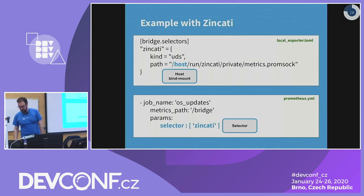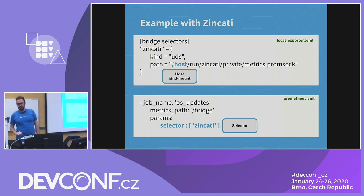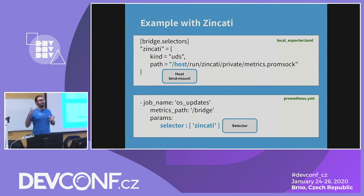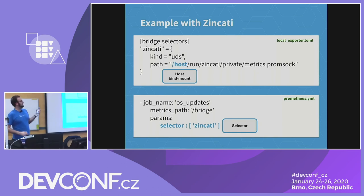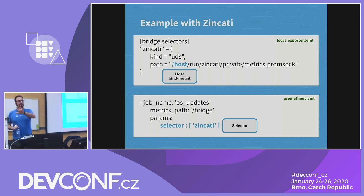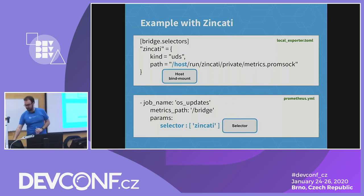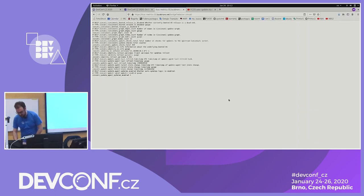Now the demo. It shows all these components put together, observed from Prometheus and Grafana. One piece to configure is running the local exporter and telling it how to reach the Zincati metrics endpoint. Given we run everything in containers, in our case we have a bind mount from the host into the container, and then tell the container this is where we provided the Unix domain socket as a bind mount from the host. We set it up so Prometheus knows how to reach it over an HTTP endpoint.